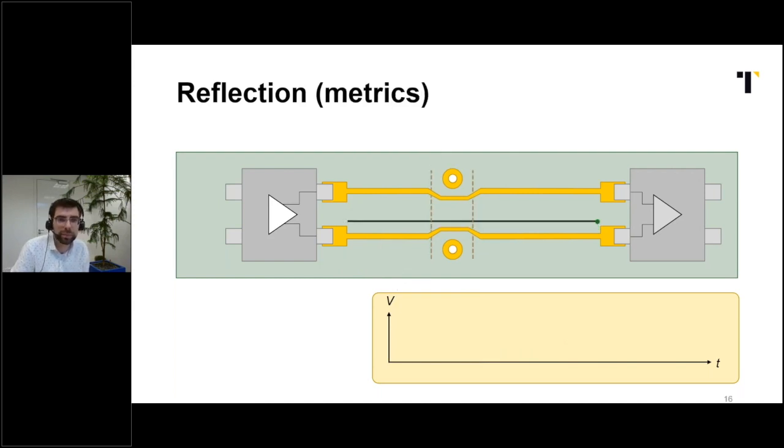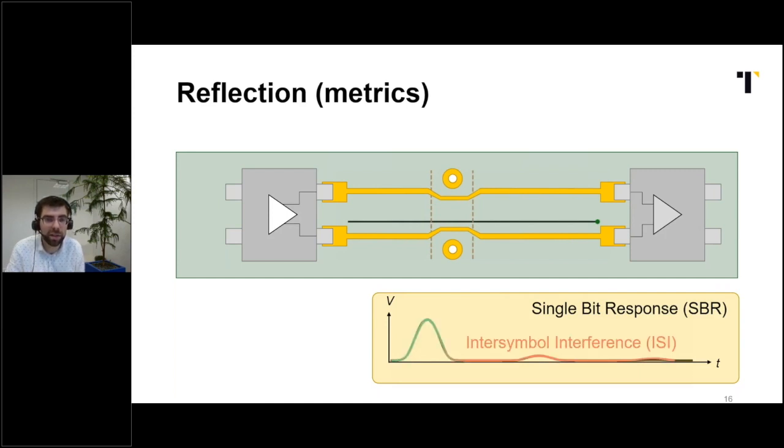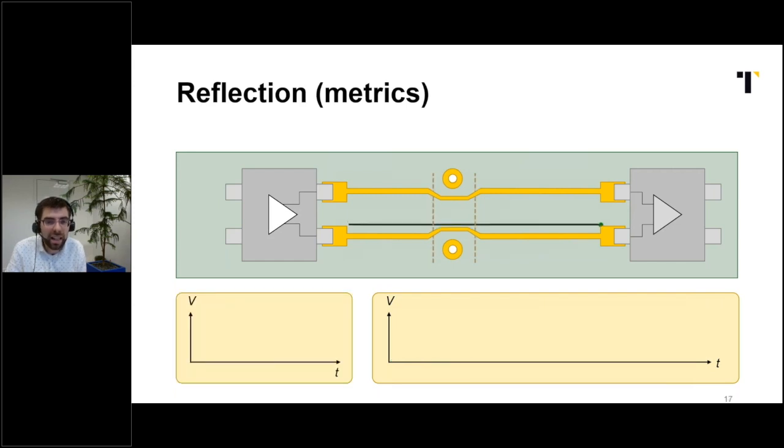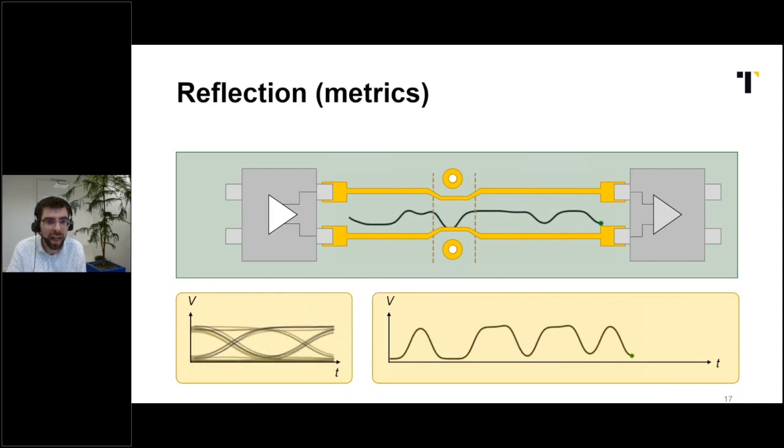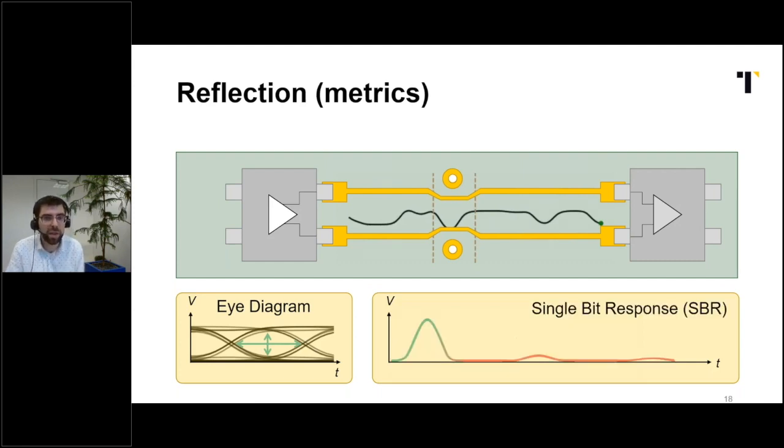First, let's transmit a single bit, both a rising and a falling edge. The received waveform is called the lonely or single bit response. It contains the wanted bit and unwanted inter-symbol interference. Secondly, let's transmit many random bits. And then we can persistently overlay them on the oscilloscope. And this is called the eye diagram or eye pattern. The height and the width of the eye opening are metrics for the signal integrity. This is important to remember: the eye diagram and the single bit response are important metrics for the signal integrity of a link.